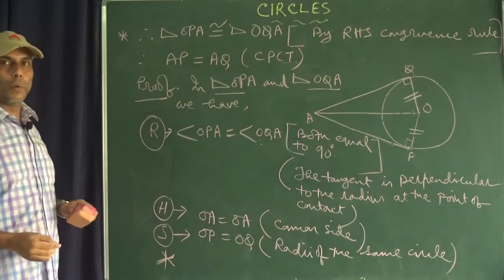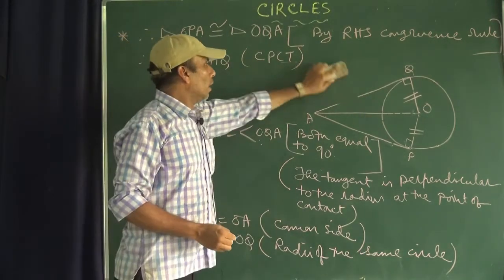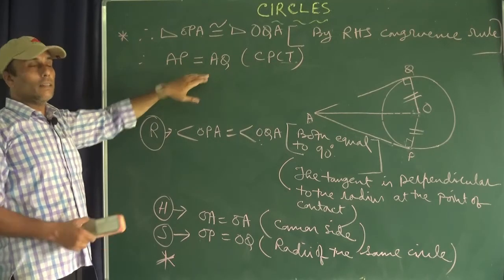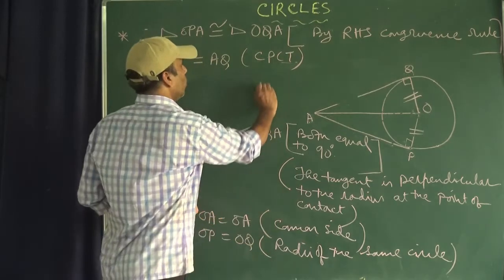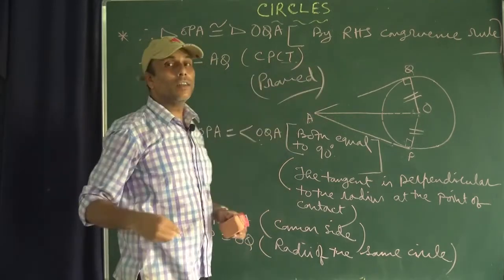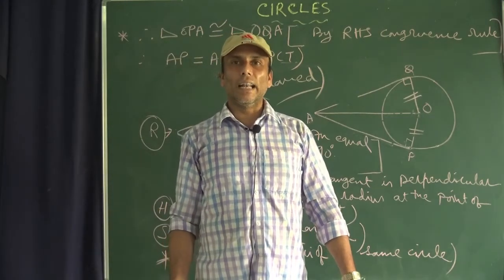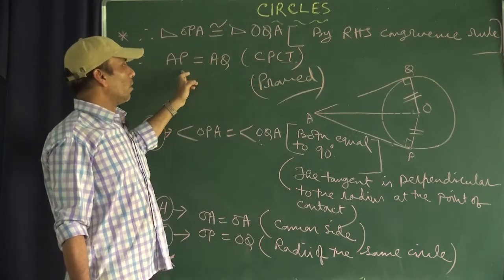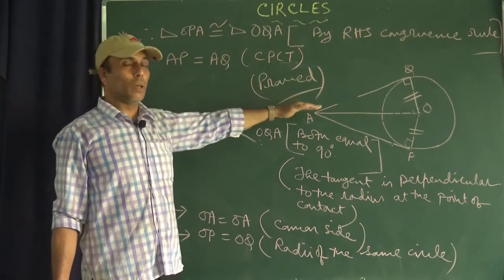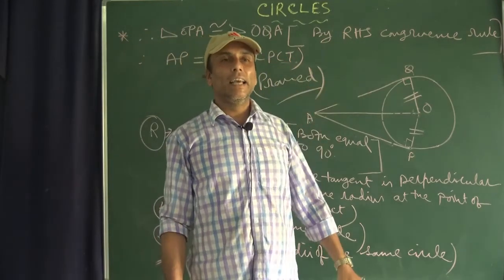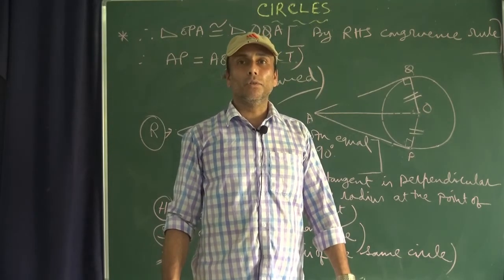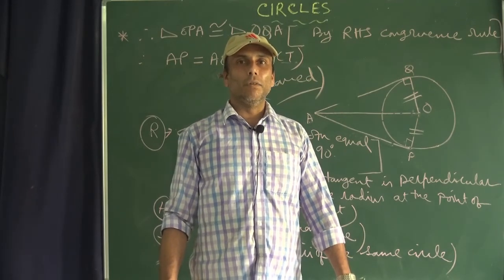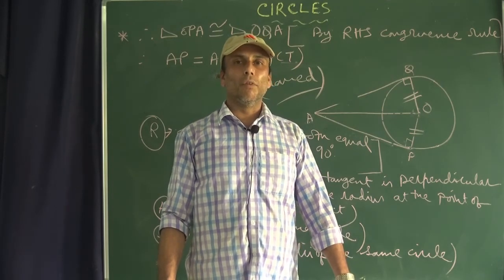CPCT stands for corresponding parts of congruent triangles. Looking at what we set out to prove — AP equal to AQ — we have proved it. So the theorem is established: the tangents drawn from an external point to a circle are equal in length. AP and AQ are two tangents and we have shown they are equal. These two results — tangents are equal and tangent is perpendicular to radius at point of contact — are used for solving many problems based on circles. I hope you have understood this video. Thank you for watching. Bye bye.